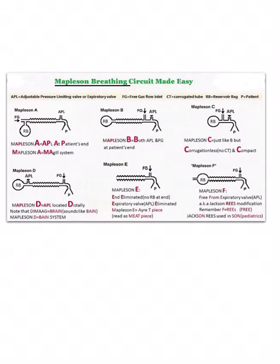First of all, we'll know what are the ends. APL is the adjustable pressure limiting valve, also known as the expiratory valve. Then we have the FG, fresh gas flowing lead. Then we have the corrugated tube. RB stands for reserve wire bag and P stands for patient end. Now coming to the six types of Mapleson circuits, A to F.